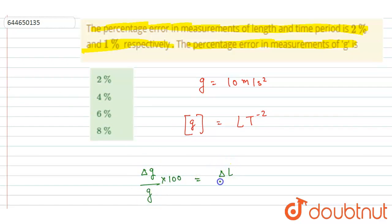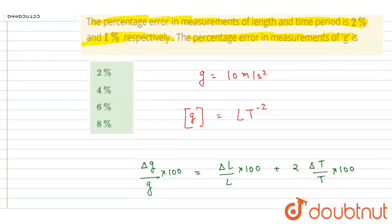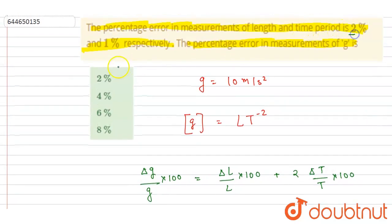here, it is 1 and 2, and the negative power will be taken as positive because the error can't be negative. So here the percentage error in the measurement of length is 2, and percentage error in the measurement of the time period is 1. So I will write 2 plus 2 into